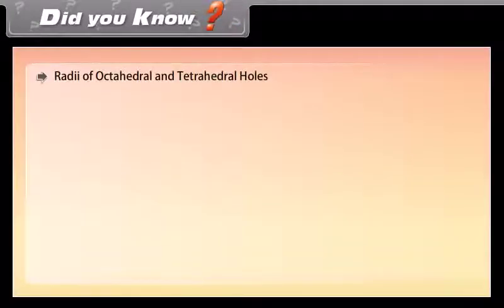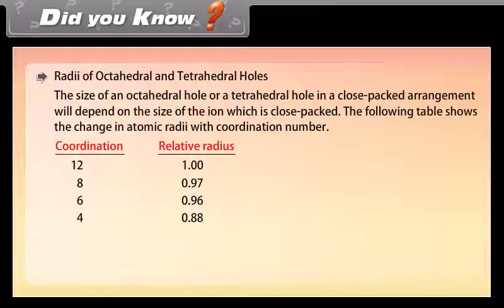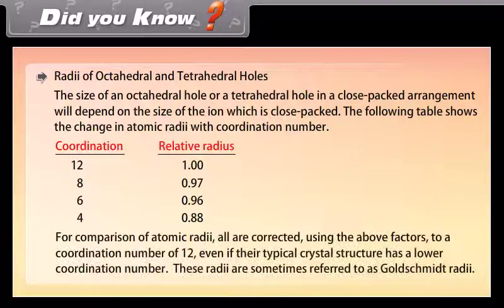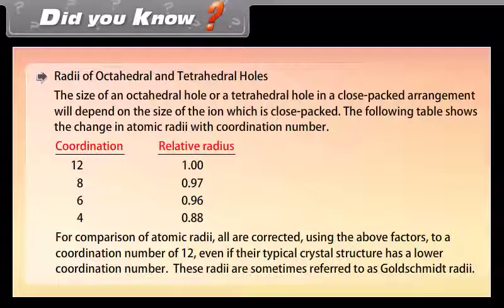Radii of octahedral and tetrahedral holes: the size of an octahedral hole or a tetrahedral hole in a close-packed arrangement depends on the size of the ions which are close-packed. The following table shows the change in atomic radii with coordination number. For comparison, all atomic radii are corrected to a coordination number of 12, even if their typical crystal structure has a lower coordination number. These radii are sometimes referred to as Goldschmidt radii.